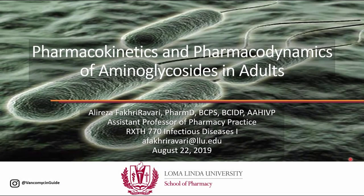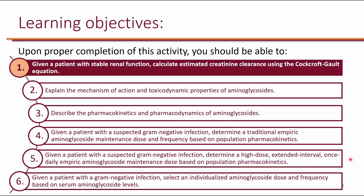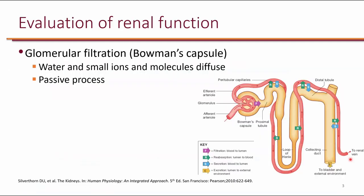I'm Dr. Fakir Averi, and this is pharmacokinetics and pharmacodynamics of aminoglycosides in adults. Our first learning objective is: given a patient with stable renal function, calculate estimated creatinine clearance using the Cockcroft-Gault equation.